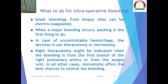For intraoperative bleeding: small bleedings from biopsy sites can be electrocoagulated. When a major bleeding occurs, packing is the first thing to do. In case of uncontrollable hemorrhage, the decision is to use either thoracotomy or sternotomy. Right thoracotomy might be indicated when the bleeding is from the first branch of the right pulmonary artery or from the azygous vein. In all other cases, sternotomy offers the best chances to control the bleeding.